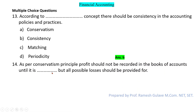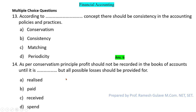As per the conservatism principle — also known as prudence — profit should not be recorded in the books of account until it is realized. If profit is not realized, it should not be written in the books. So as per the conservatism principle, profit should not be recorded until realized. Here option A is the right answer.